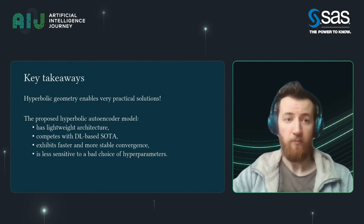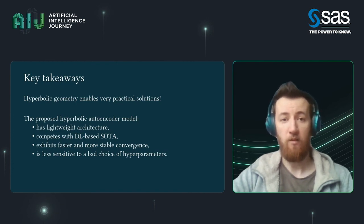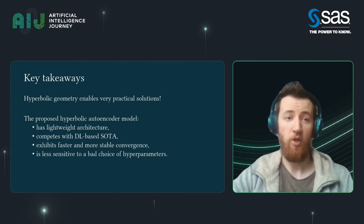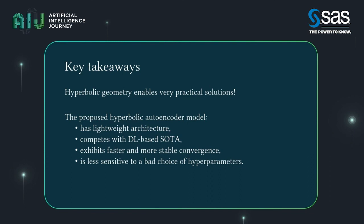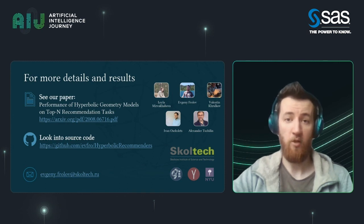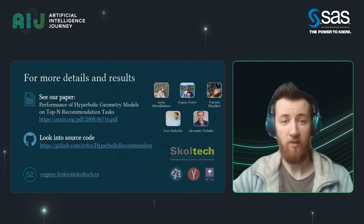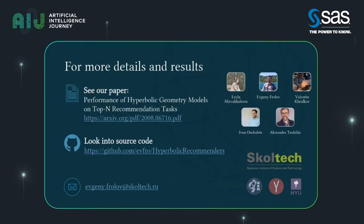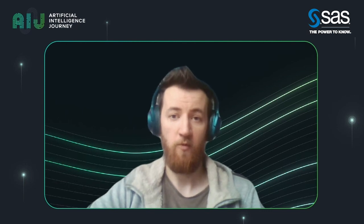Summing up: hyperbolic geometry enables very practical, lightweight architectures without losing any quality. It allows us to get stable convergence quickly. The quality is competing with deep learning-based state-of-the-art, and it has a line of advantages in analytics. This architecture is very simple — only three layers, no additional tricks or heuristics used. If you want to know more, you can check our paper. The whole team is shown on the slide here. You can check the GitHub code or contact me with any questions. I'm also ready for your questions now. Thank you.